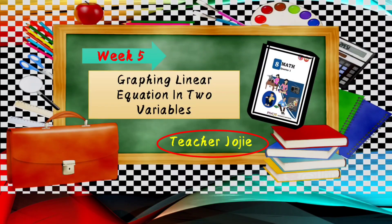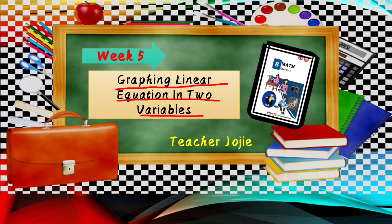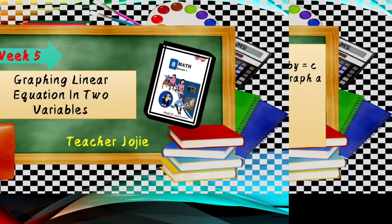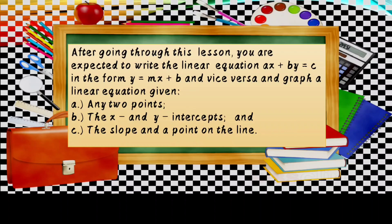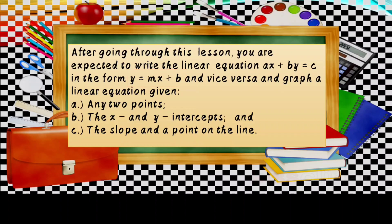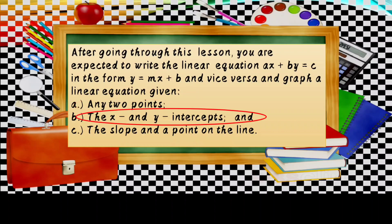Good day everyone! I'm your teacher Georgie and I will discuss to you the Week 5 of Grade 8 Mathematics Module. Week 5 is all about graphing linear equations in two variables. After going through this lesson, you are expected to write the linear equation AX plus BY equals C in the form Y equals MX plus B and vice versa, and also graphing a linear equation given any two points, the X and Y intercept, and the slope and a point on the line.